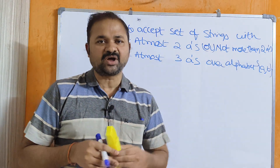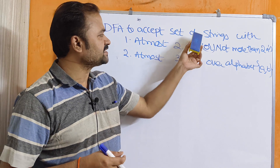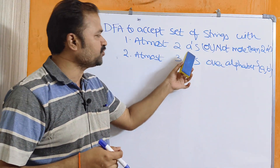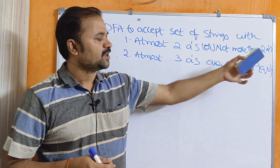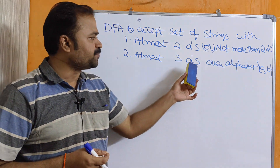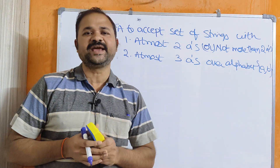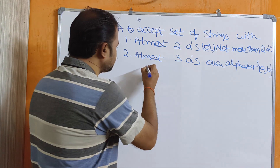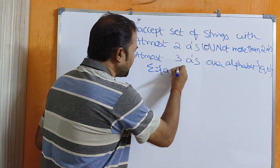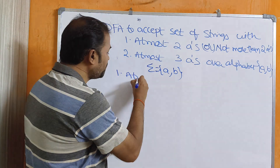Let us solve these two problems. DFA to accept set of strings: the first question is at most 2 A's, or not more than 2 A's. The second question is at most 3 A's, or not more than 3 A's, over the alphabet {A, B}. Let us solve the first problem. What is sigma? Sigma equals {A, B}. The first problem is: at most 2 A's.